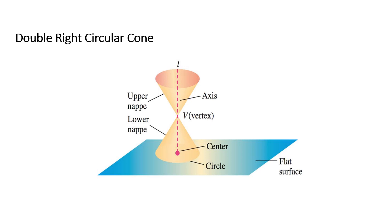So here are the parts of the right circular cone. We have the nappes, the upper nappe and the lower nappe. We also have the axis and the vertex. We can also see here the flat surface or the plane.